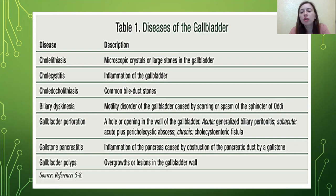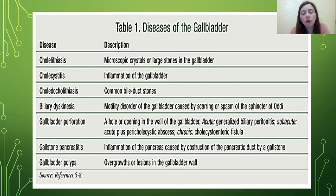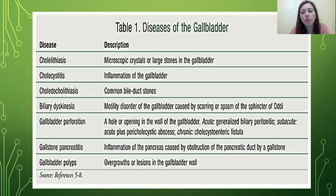Gallbladder perforation may be acute — presenting as generalized biliary peritonitis — subacute, presenting as acute perforation plus peri-cholecystic abscess, or chronic, presenting as cholecystoenteric fistula. Gallstone pancreatitis is inflammation of the pancreas caused by obstruction of the pancreatic duct by a gallstone. Gallbladder polyps are overgrowths or lesions in the gallbladder wall.